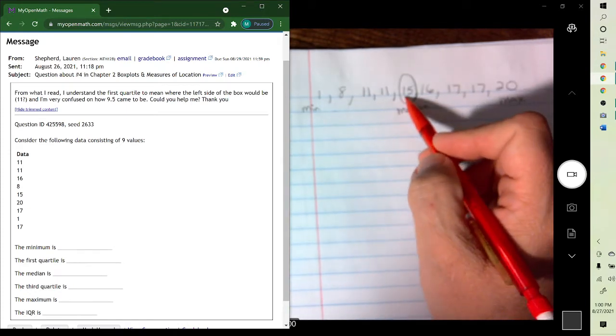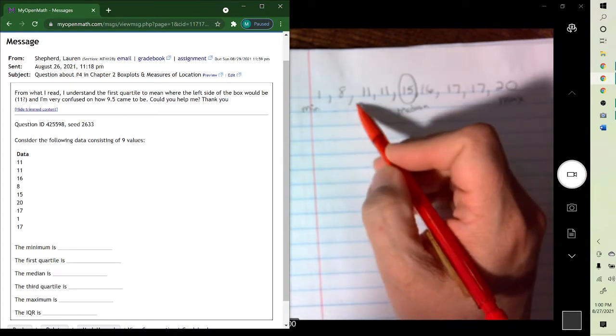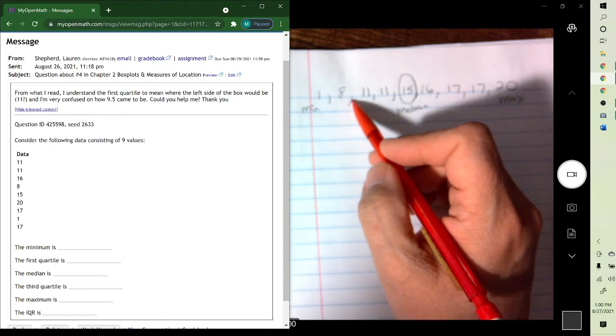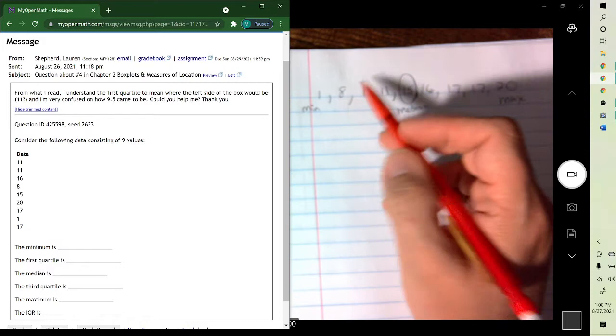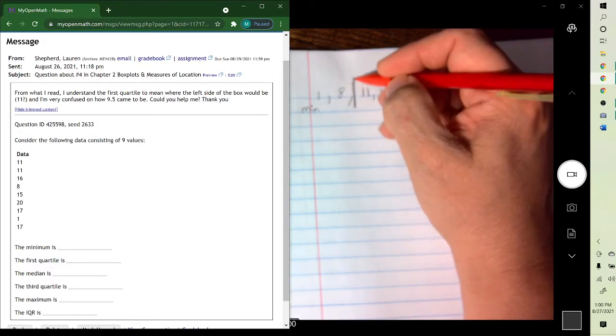So if we use it, the median would be 15. And then to find the first quartile, it's the middle of the bottom group of data. So the first quartile would be halfway between here.